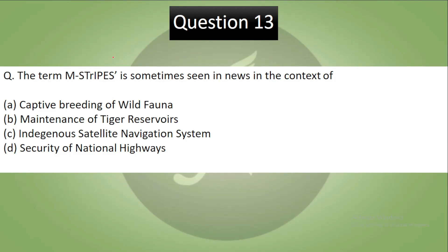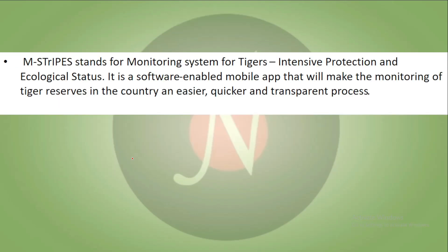Question 13, the last question of today's session: The term 'M-STrIPES' as sometimes seen in the news is used in the context of — A: captive breeding of wild fauna, B: maintenance of tiger reserves, C: indigenous satellite navigation system, D: security of national highways. Pause the video and try to answer. The correct answer is B. M-STrIPES stands for Monitoring for Tiger Intensive Protection and Ecological Status. It is a software-enabled mobile app that makes monitoring of tiger reserves easier, quicker, and more transparent.